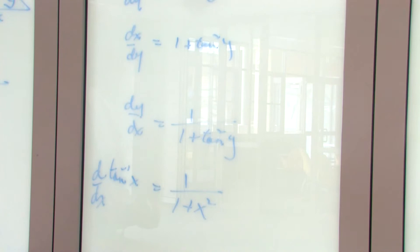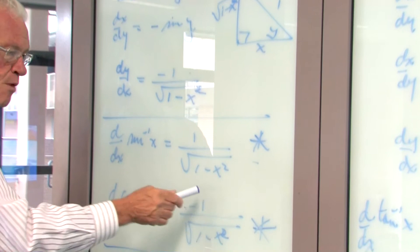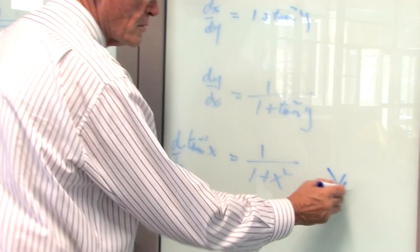Now look at these three results — you have to know these, and they will always be asked at Extension 1. The derivative of arcsin(x) is 1 over the square root of 1 minus x squared. The derivative of arccos(x) is minus 1 over the square root of 1 minus x squared. And the derivative of arctan(x) is 1 over 1 plus x squared.